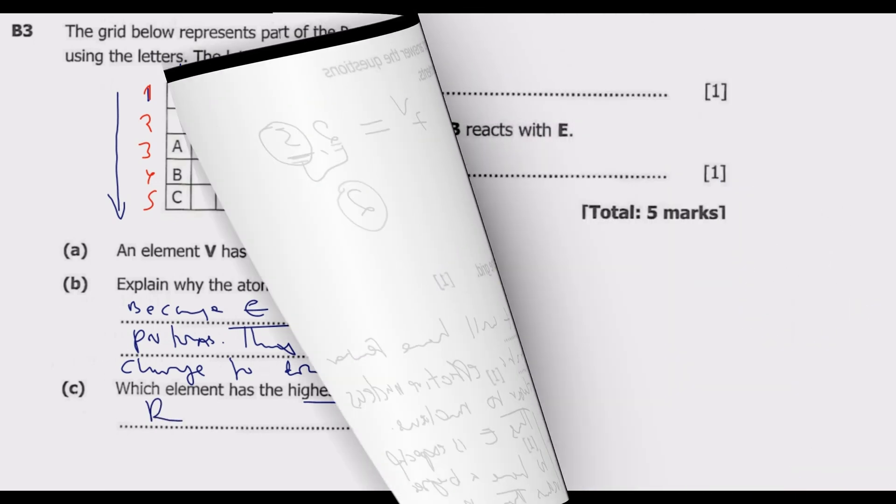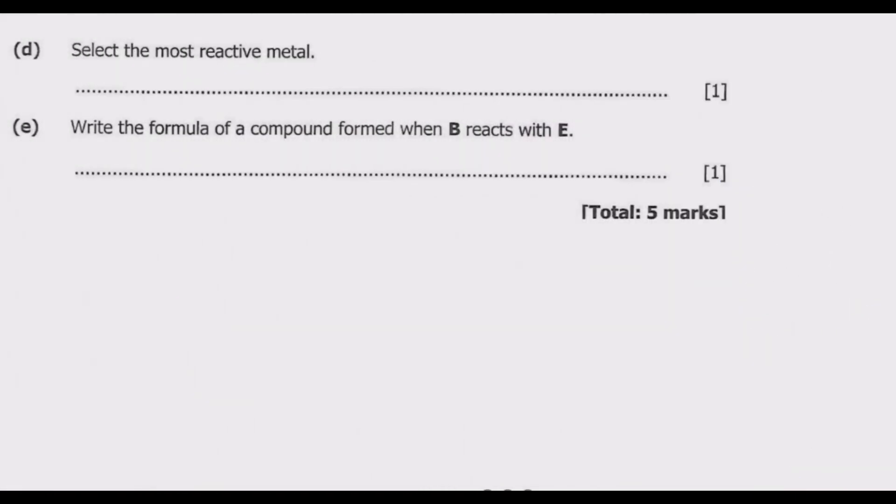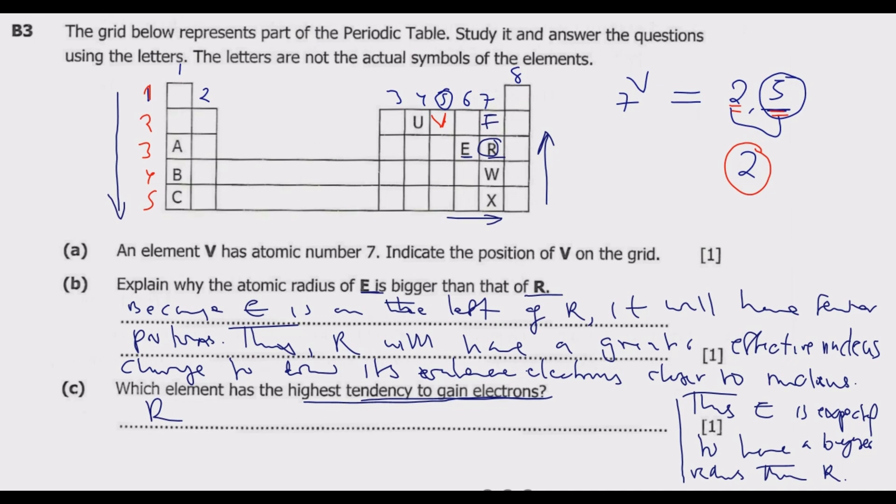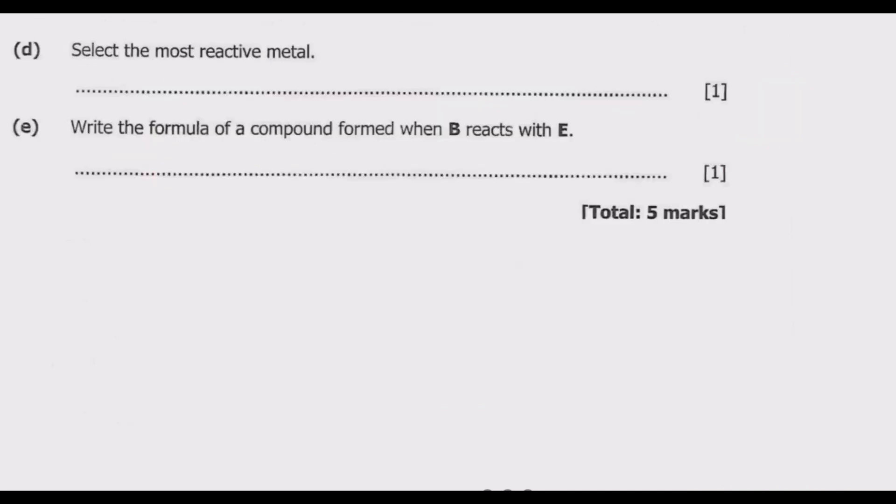We move to the next question. Question D: Select the most reactive metal. So this one I've already explained. The most reactive metals are found in group one at the bottom, because as you move down, the activity of metals increases. So C is the correct answer.